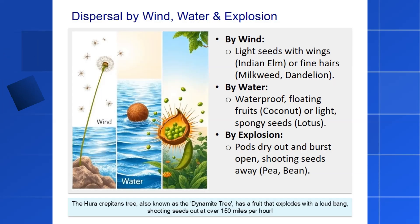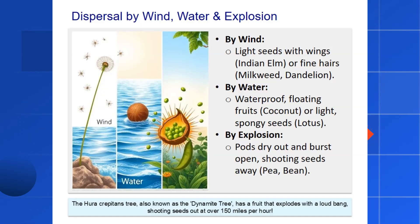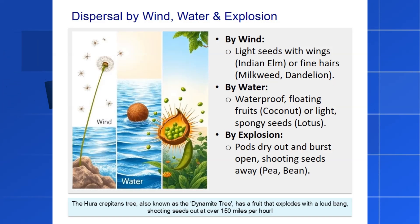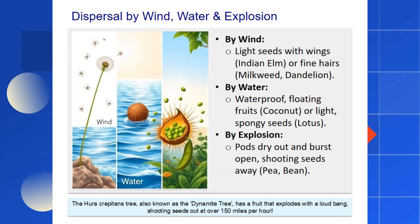Then there's the most dramatic method: explosion. Some plants, like peas or beans, grow their seeds in a pod. When the pod dries, the tension builds up until it suddenly twists and bursts open, flinging the seeds in all directions. Speaking of explosions, the fruit of the dynamite tree is a real powerhouse. When it ripens, it explodes with a loud crack like a firecracker and can fling its seeds more than 100 feet away, at speeds faster than a cheetah can run.